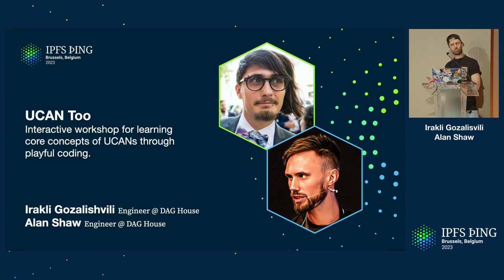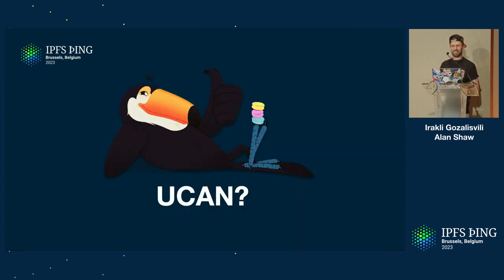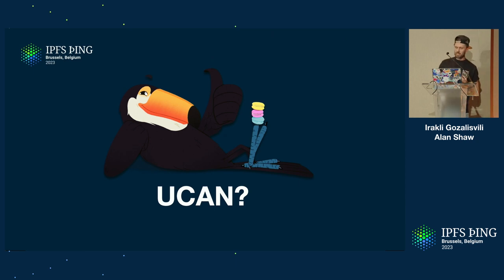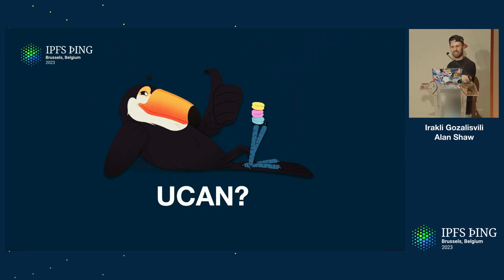I'm going to do a little bit of an intro and explainer before we get stuck into the workshop. So let's start with the first thing we should probably cover: what even is a UCAN? UCAN stands for User-Controlled Authorization Networks. The key thing here is that they are user-controlled, and UCANs are a way of doing authorization where the user is fully in control.